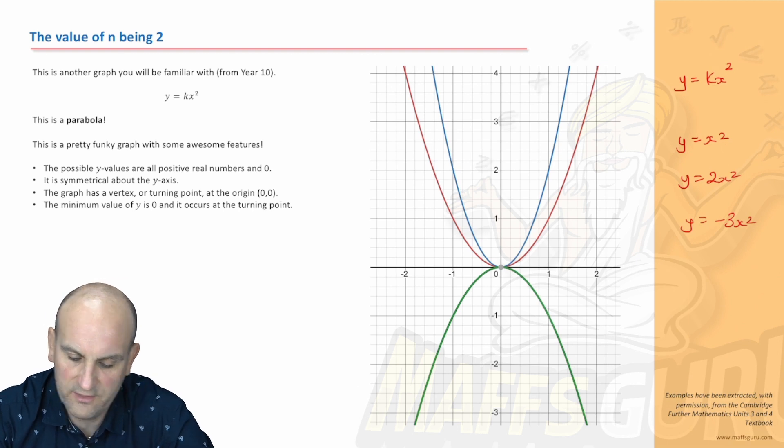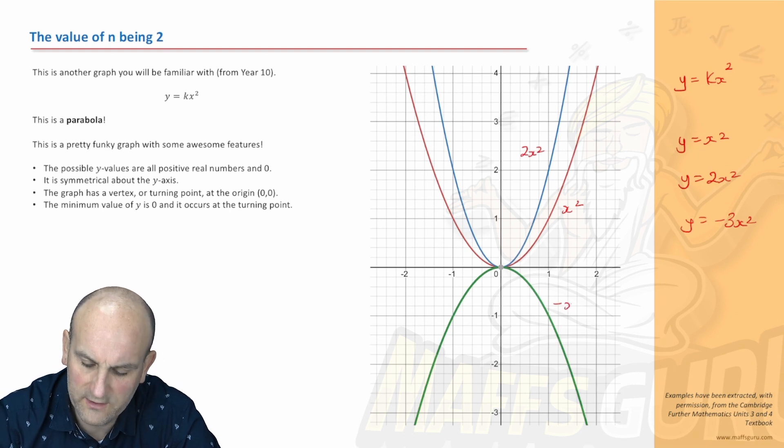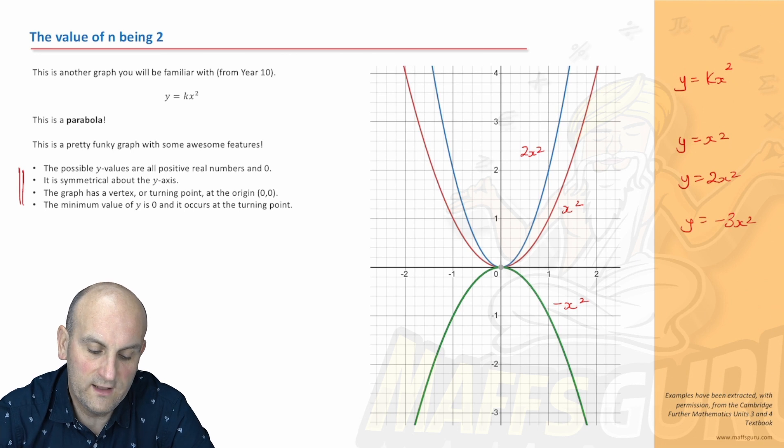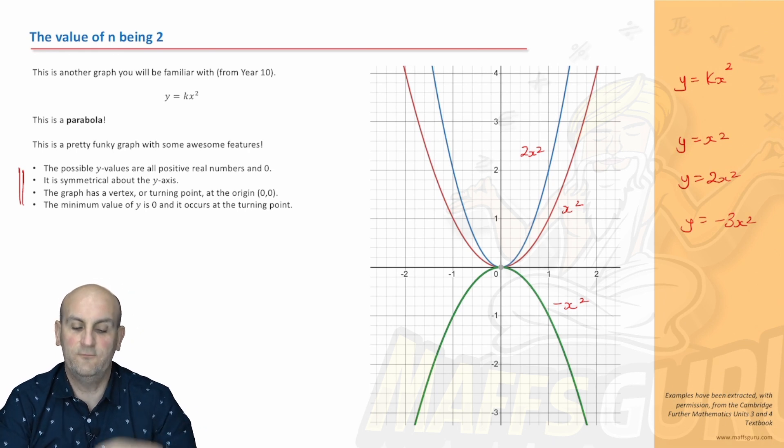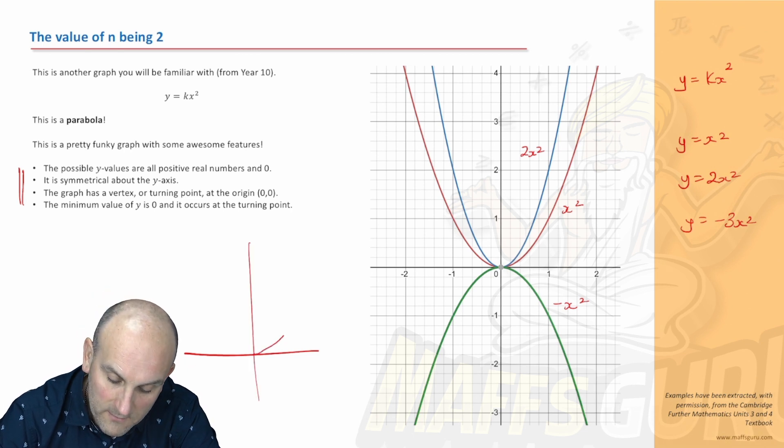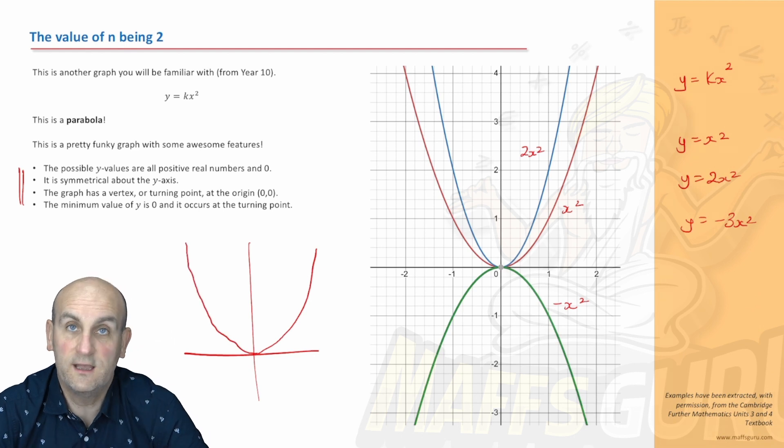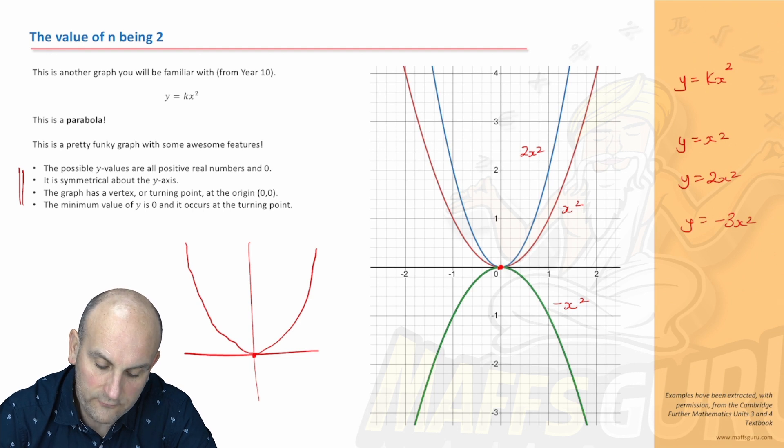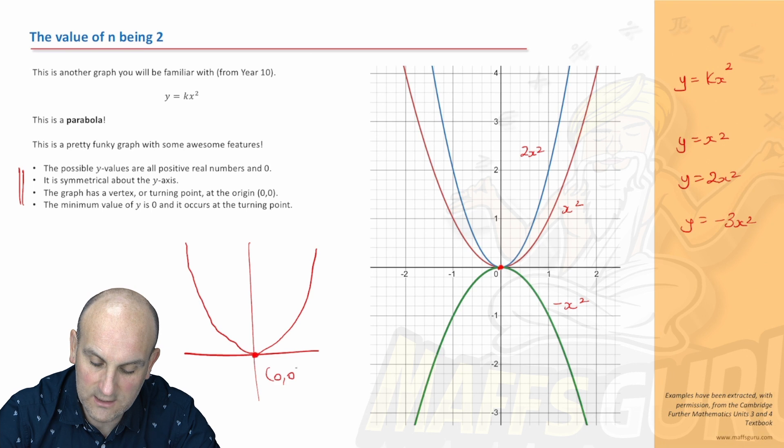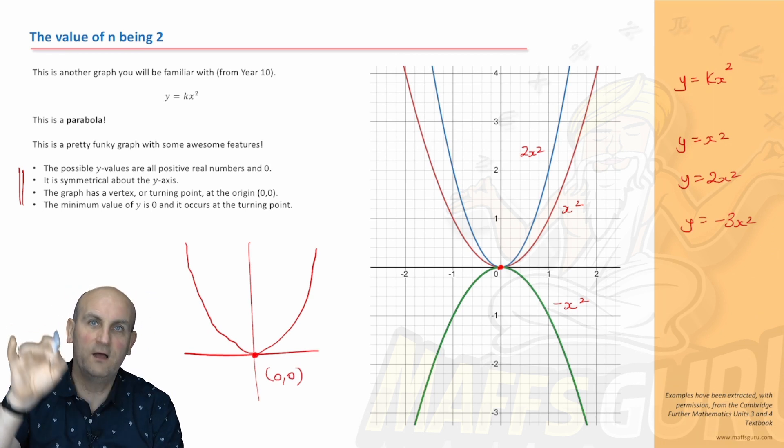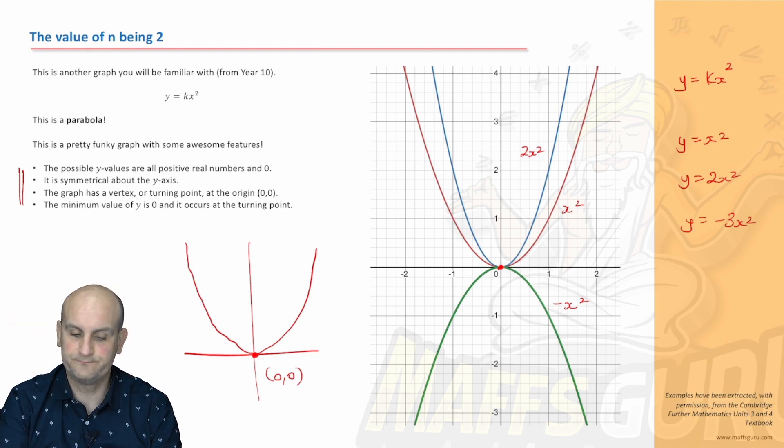I think this one here is x squared, that one there is 2x squared, and this one here is actually minus x squared. The minus just reflects it. What do we know? There's some pretty funky stuff to learn. The possible y values are all positive real numbers and zero. What that means is if k is positive, all of the y values are positive. It's symmetrical around the y-axis. What that means is if I look at my graph here on one side, it's an exact mirror image on the other side. The graph has a vertex or a turning point at the origin. The origin is this point here, so basically the graph will touch the point zero, zero. The minimum value of y is zero and it occurs at the turning point.